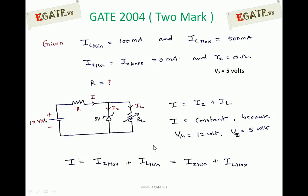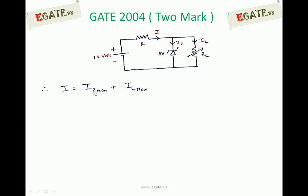We can calculate total current. Total current I equals IZ minimum plus IL maximum, that is 0 plus 500 mA, total is 500 mA. We know the potential drop across resistor R as well as current flowing through resistor R. We can easily calculate the resistance value.